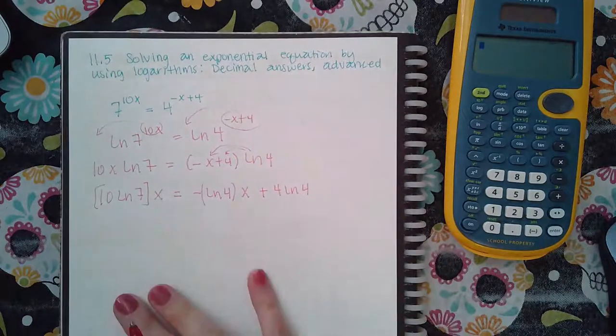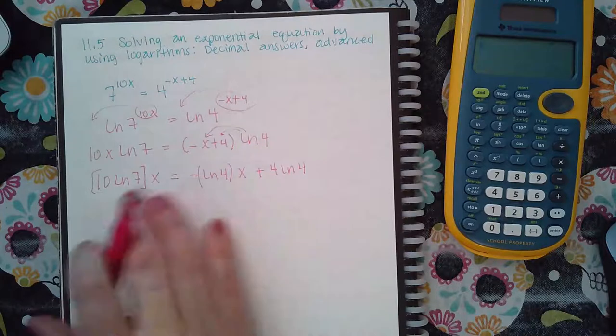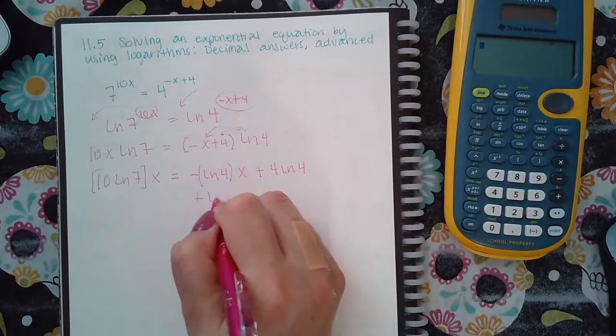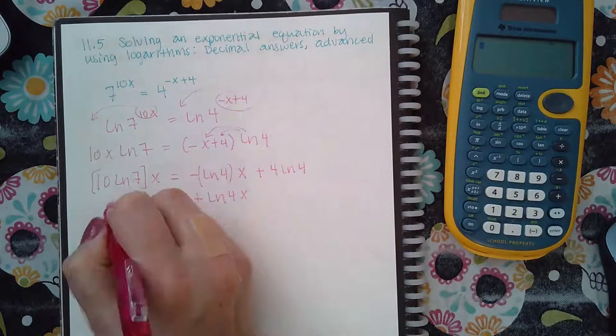Then you've got to solve for x. I want to get both of my x terms on one side, so I would add ln(4)x to both sides.